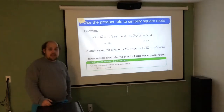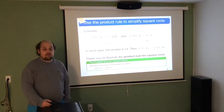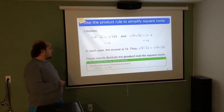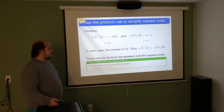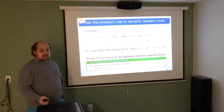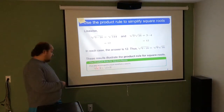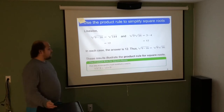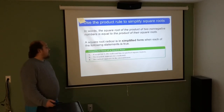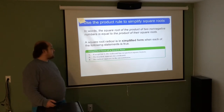Similarly, the root of 144 — which we know to be 12 — is really the root of 9 times 16. The root of 9 is 3, the root of 16 is 4, and 3 times 4 gets me back to 12. For any non-negative real numbers A and B, the root of A times B is the same as the root of A times the root of B. In words, the square root of the product of two non-negative numbers equals the product of their square roots.